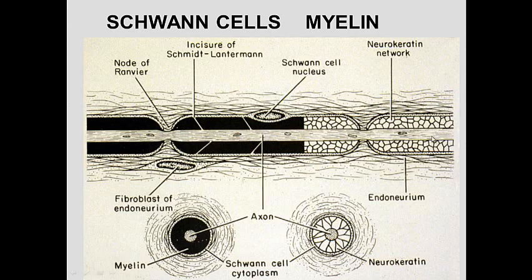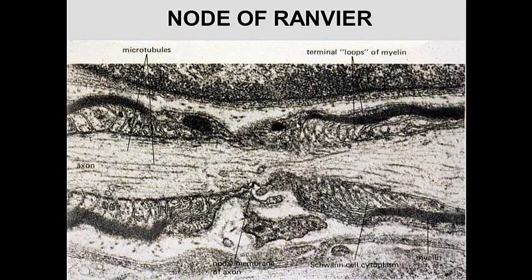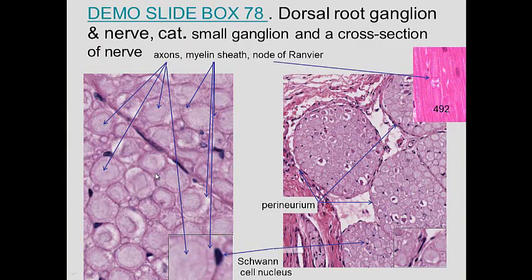If we look at an axon, it's coming down through there — a fairly long structure — and it is encased by several Schwann cells. Here's a Schwann cell nucleus, and that forms a swirl around it which myelinates it. Then there's another one, and that's a node of Ranvier — it's where one Schwann cell ends and another one begins. We can see the kind of swirl, the plasma membrane of a Schwann cell ending here, and another one beginning. We can see microtubules that are in the axon itself.